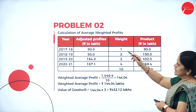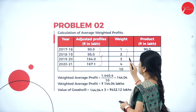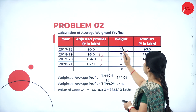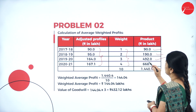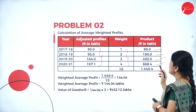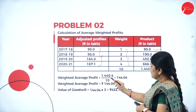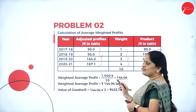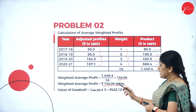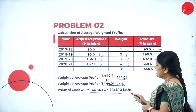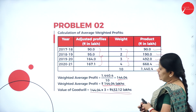Now for the calculation of weighted average profits: the adjusted profits and their weights are listed. The products are: 90 × 1 = 90; 95 × 2 = 190; 164 × 3 = 492; 167.1 × 4 = 668.4. The total is 1440.4. Dividing by the total weight of 10, the weighted average profit is 144.04 lakhs. The value of goodwill is 144.04 × 3 = 432.12 lakhs.